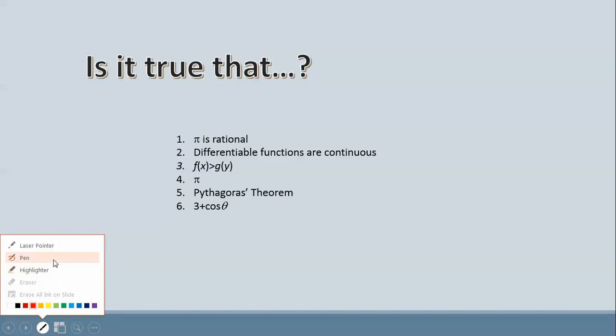But let's look at what they mean by it. If I take 'pi is rational' and I put it in the place of these three dots, these ellipses, I would get...